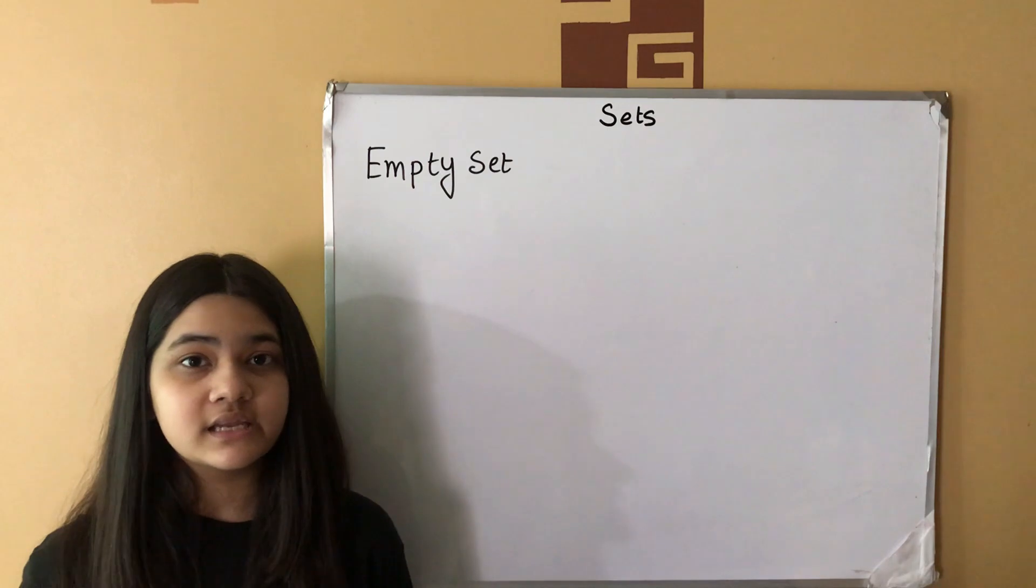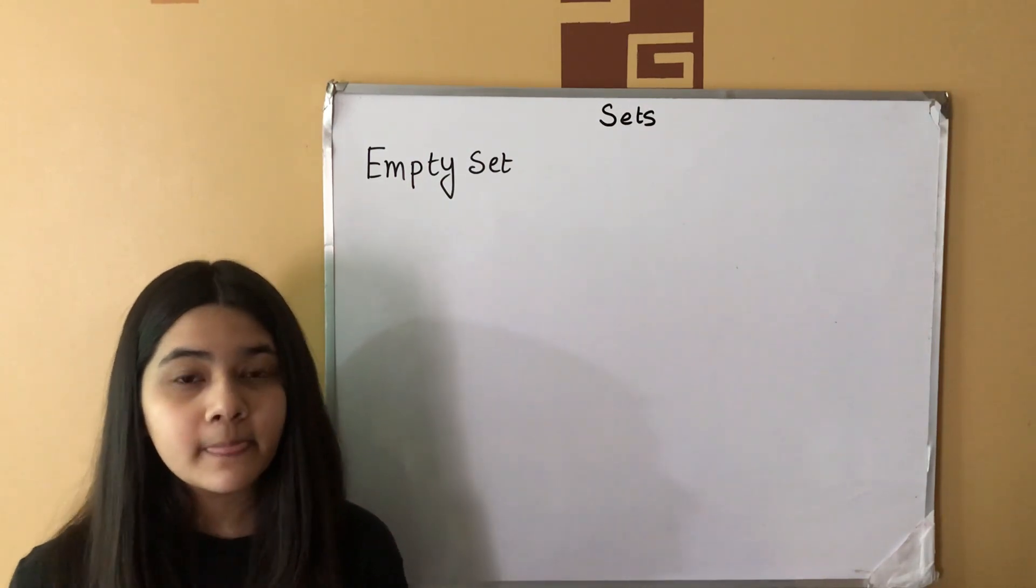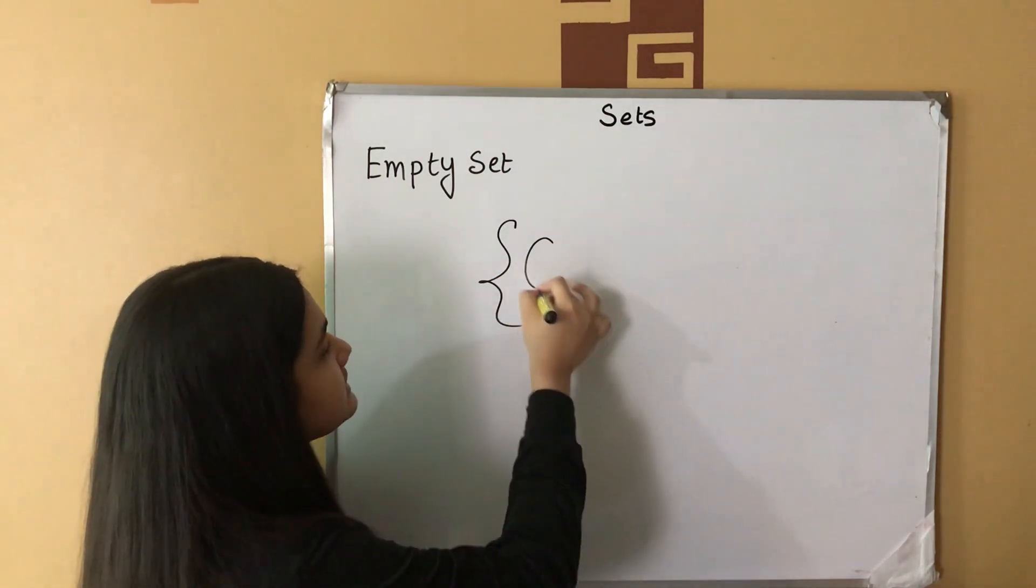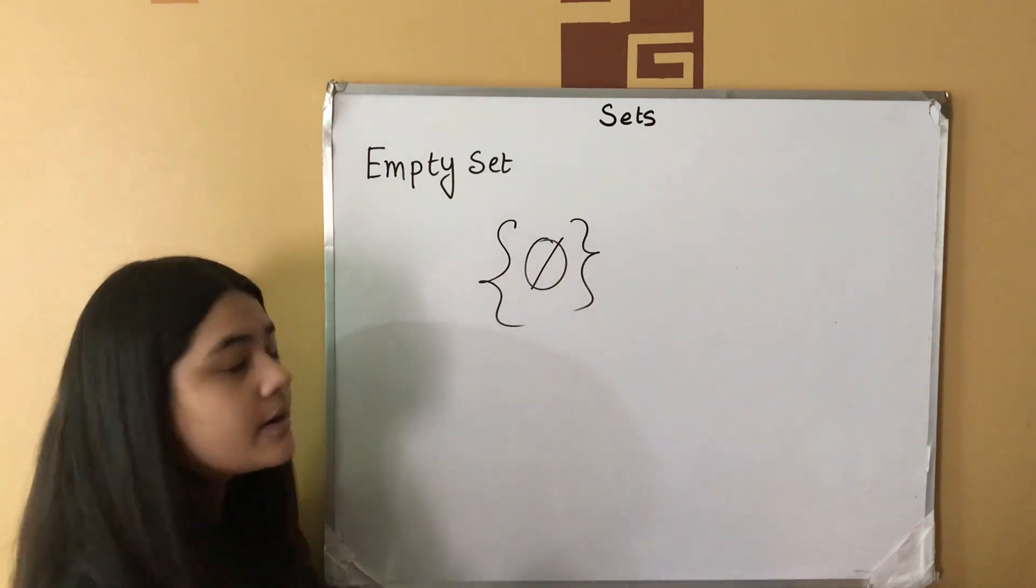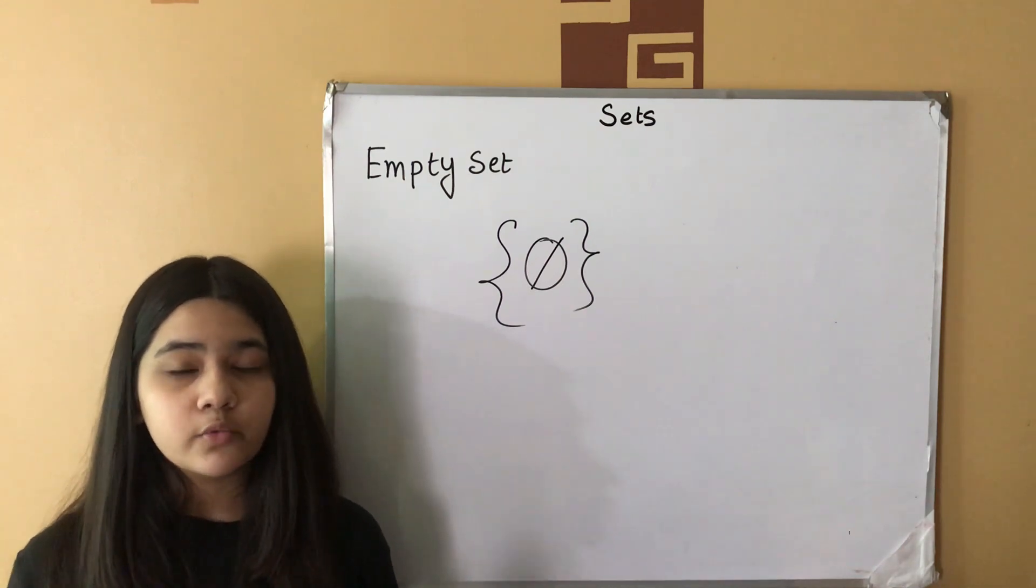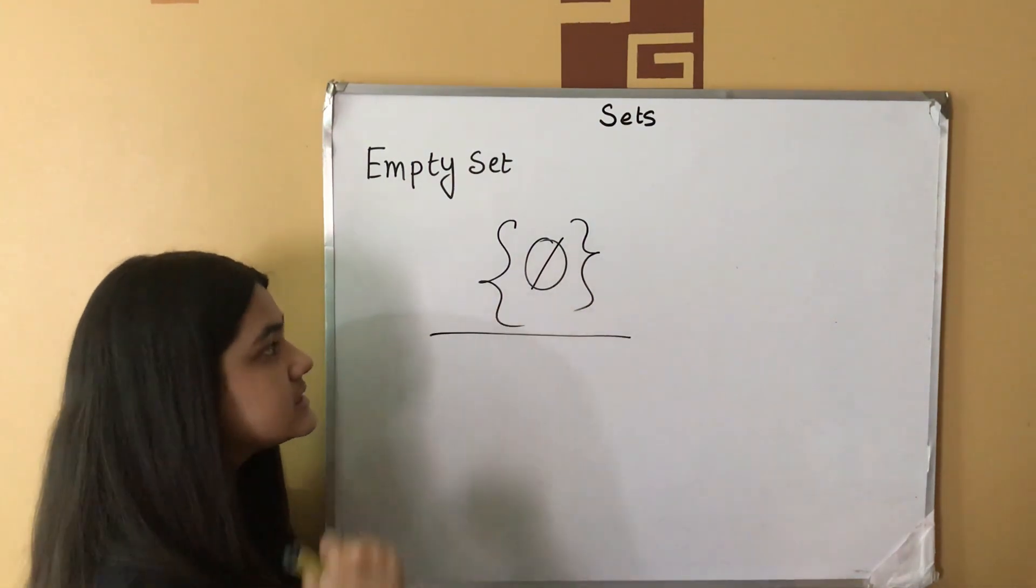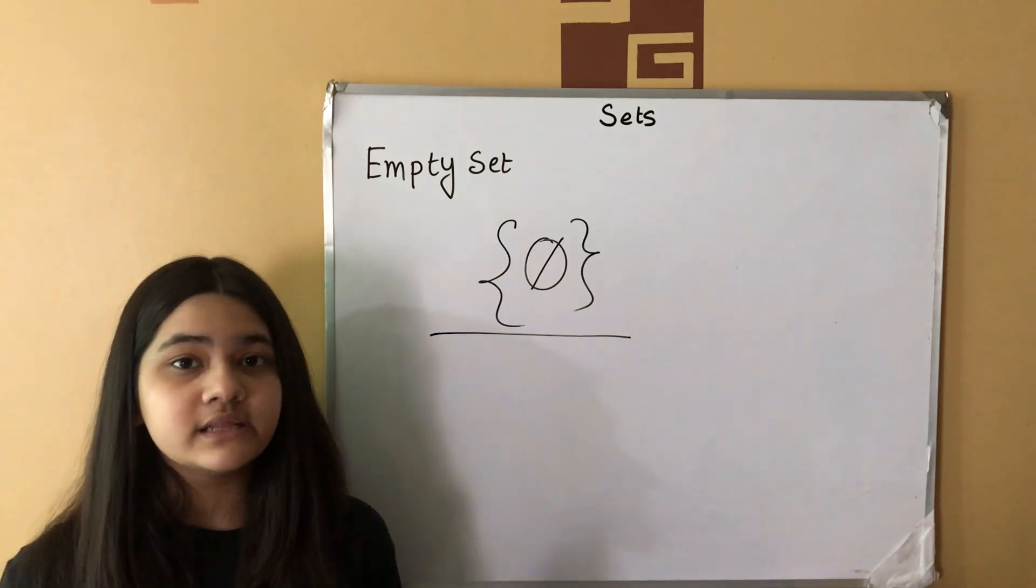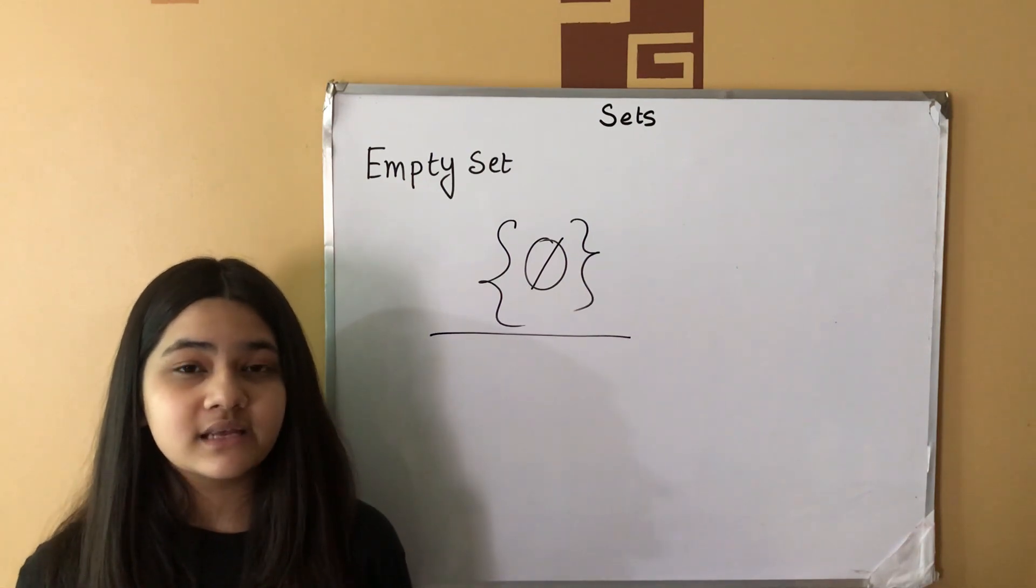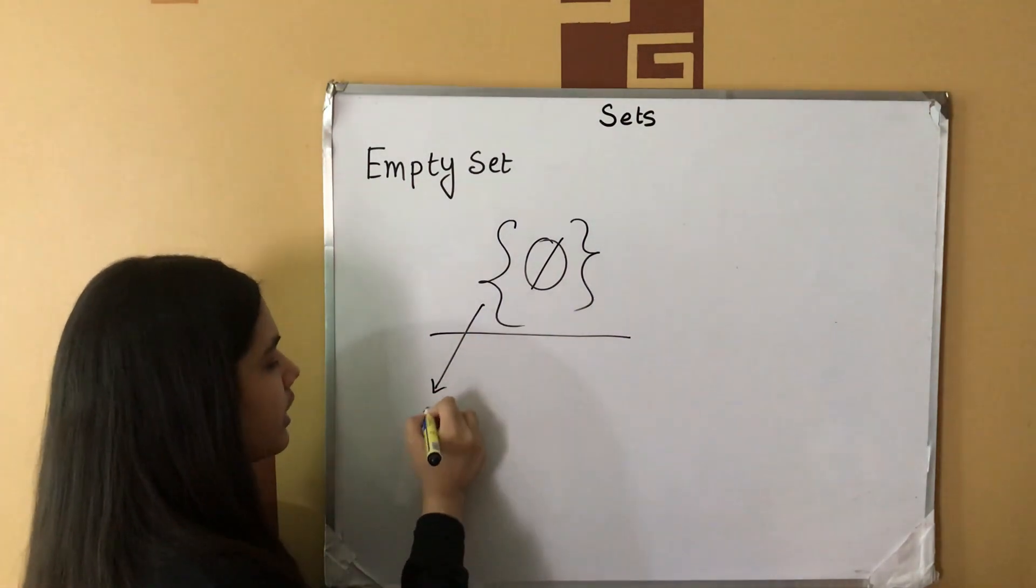Sets can also contain other sets as elements. Now, we are going to come to a bit tricky part. If a set contains the empty set as its element, then the number of or the size of that element will be 1. Now, the question is why? Because this does not symbolize the empty set itself. It represents a set containing empty set as its element. Hence, the size of this set is 1.